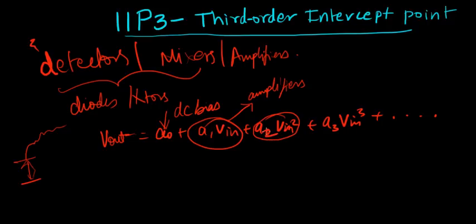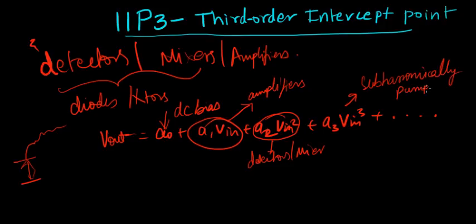And A2·Vin² is nothing but detectors, mixers. And this term A3·Vin³ is a sub-harmonically-pumped mixer, I think. It really doesn't matter what it corresponds to. What I'm trying to mention here is if you have a non-linear system, the output is given by this big term here. And in that, just the first term DC bias would always be there.